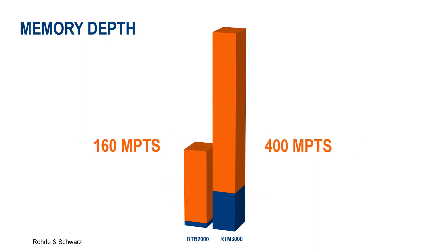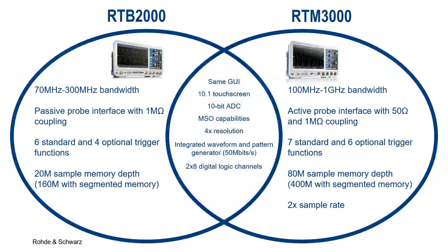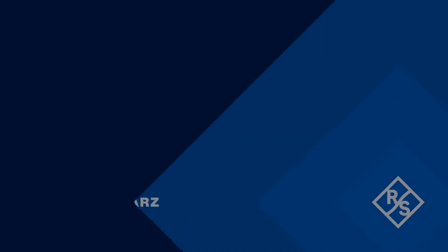The RTM3000 also has a sample rate twice as fast. For more information regarding these instruments and other available models, please visit our oscilloscope product portfolio located on the Rohde & Schwarz website. Thanks for watching, and happy testing!